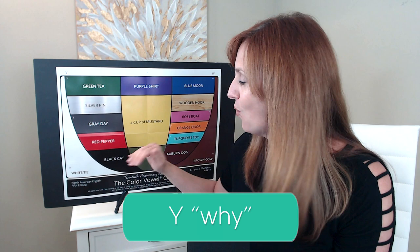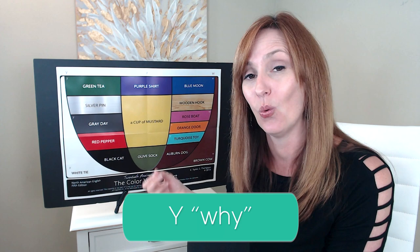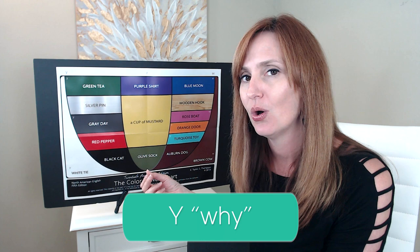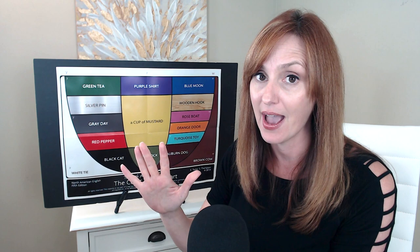Y. White tie Y. We have our I as in white vowel, and the consonant in this word is actually the W sound — there's no Y in this word. It's W into the I as in white. Y. Just like the question word 'why.' Y.